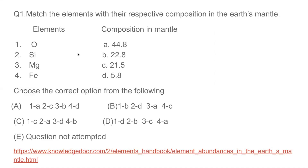There are several elements in the Earth's mantle in the form of oxides. Silicon is in the form of oxide, magnesium is in the form of oxide, and ferrous is in the form of oxide. So oxygen (O) is at 44.8% because this is the maximum value. Therefore option A is correct, and the answer is A.